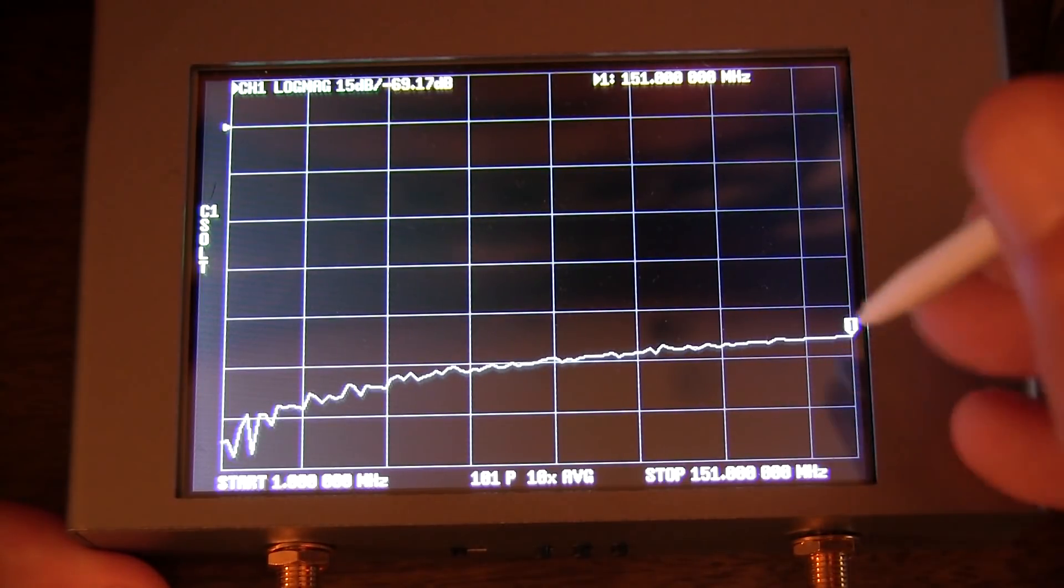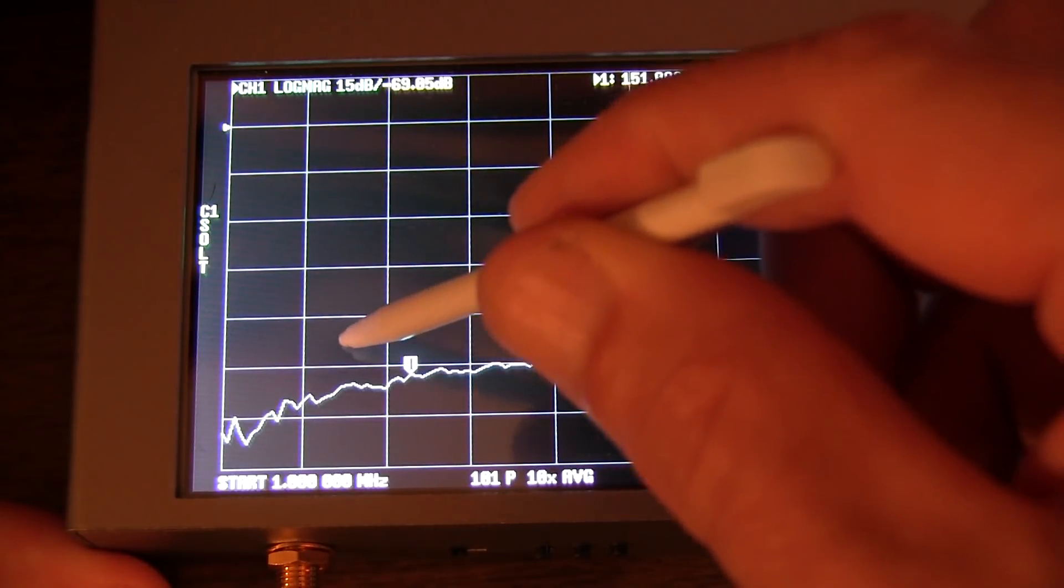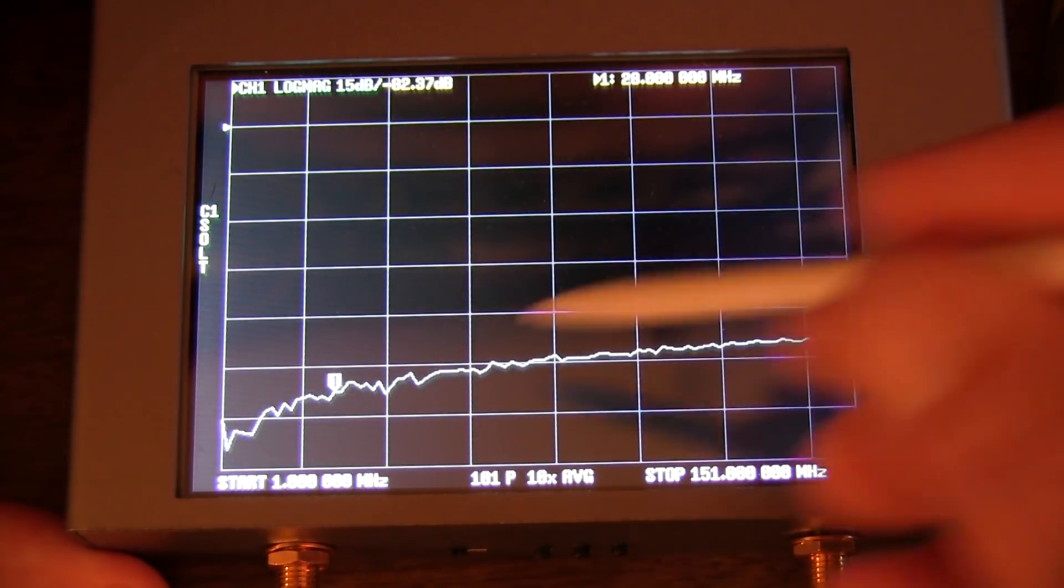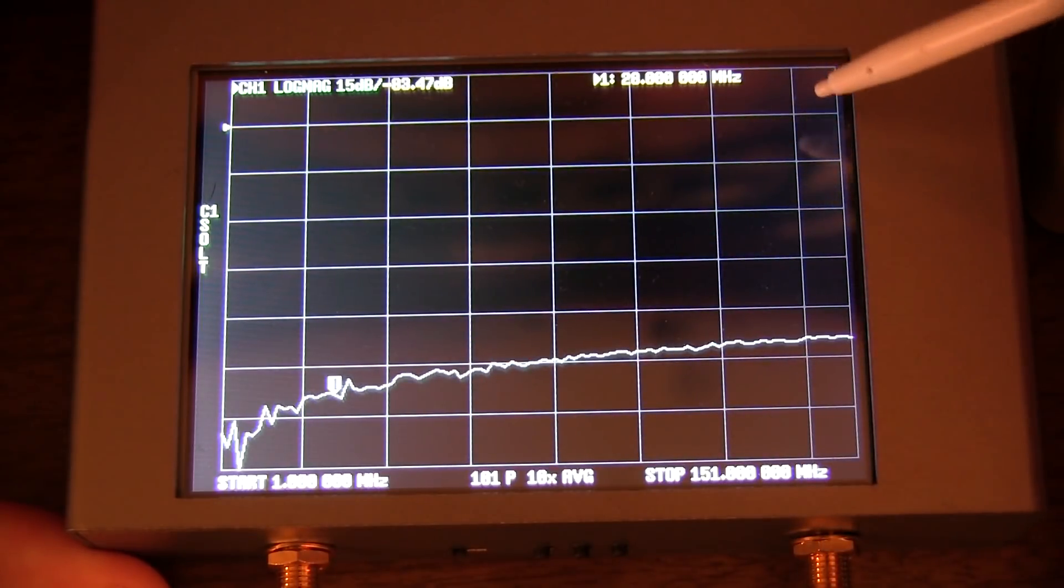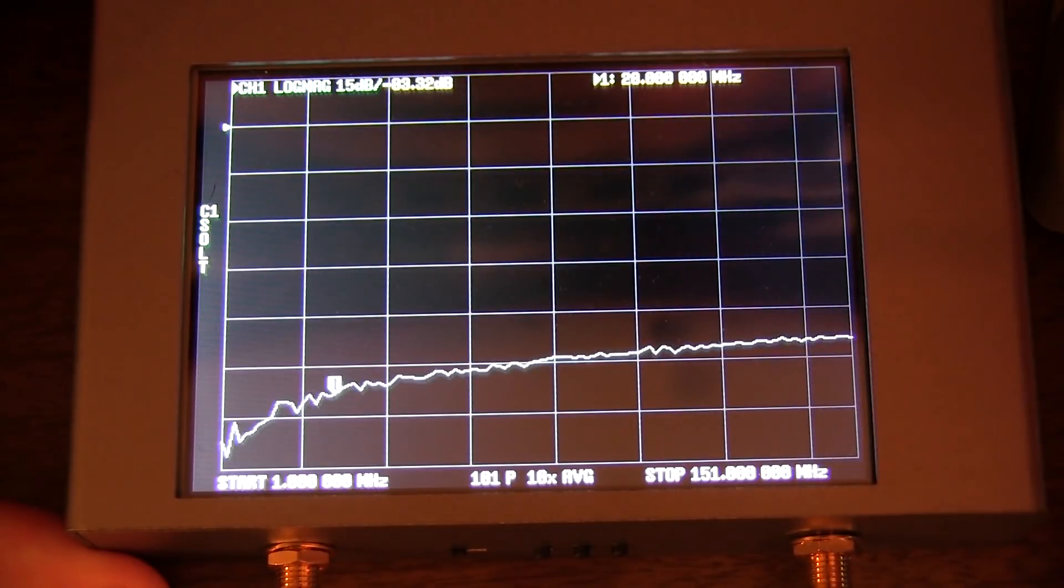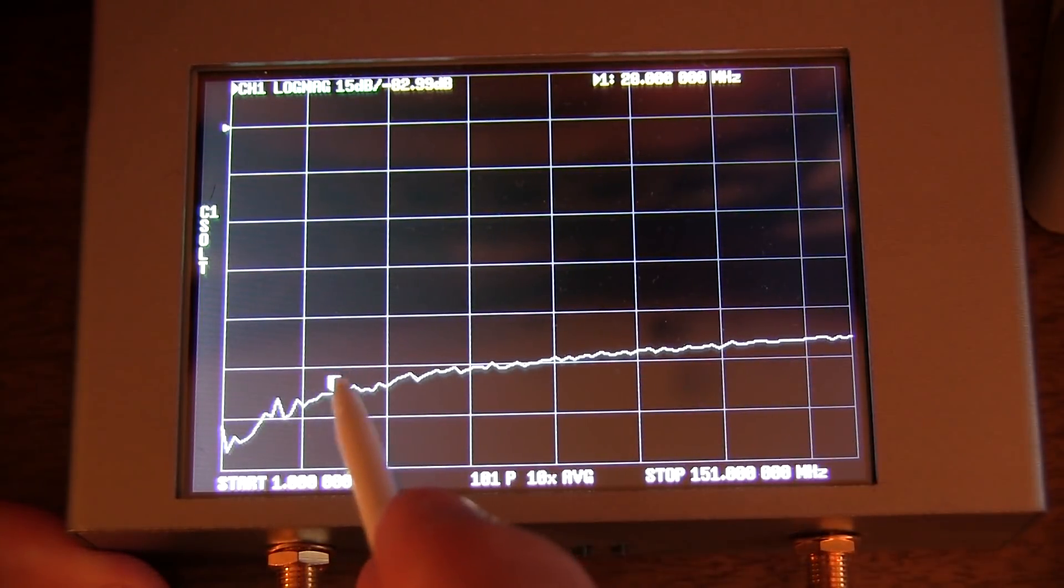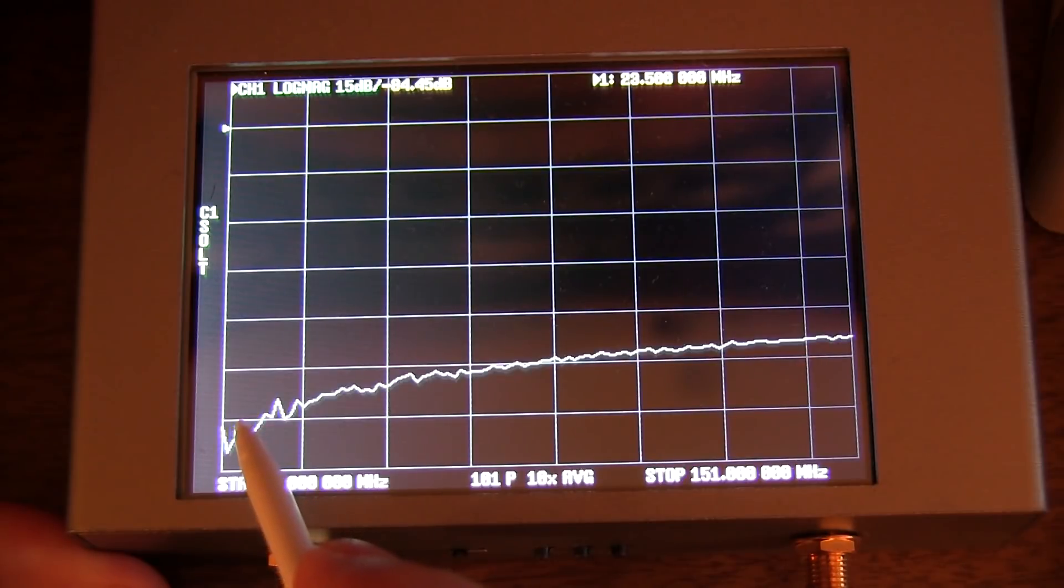Of course, that's at 150 megahertz, which is probably the top end for that switch. If I come down into the HF band here, let's go down to there's 28 megahertz. So that's the 10 meter band. I've got 82, almost 83 dB of isolation there. So plenty of margin.